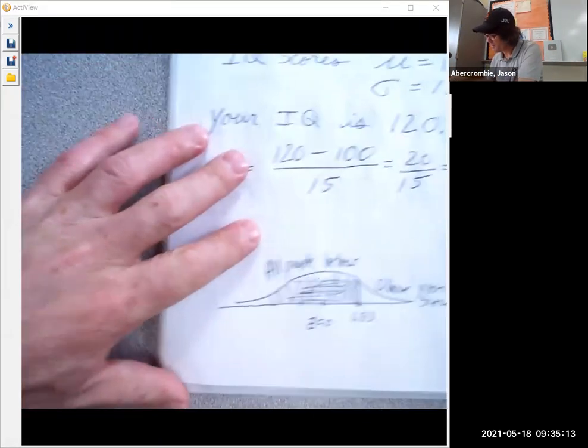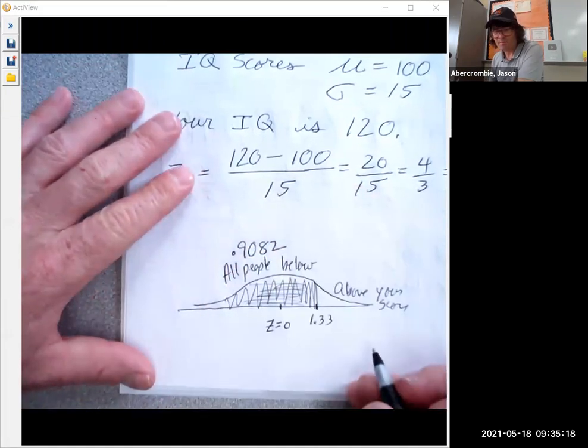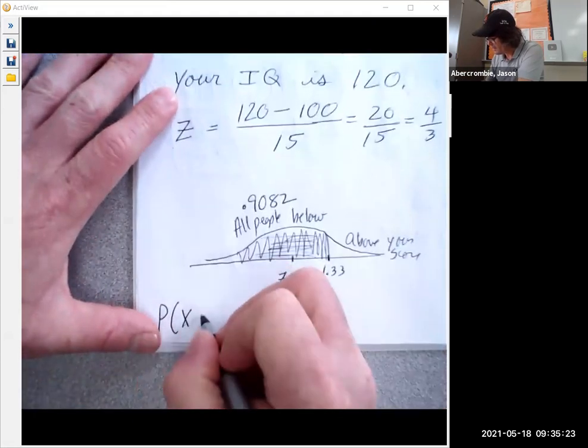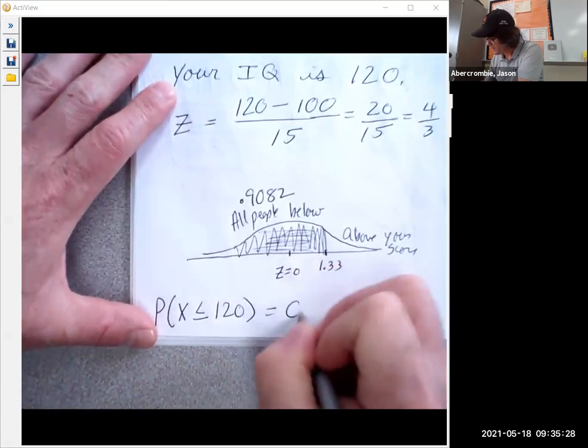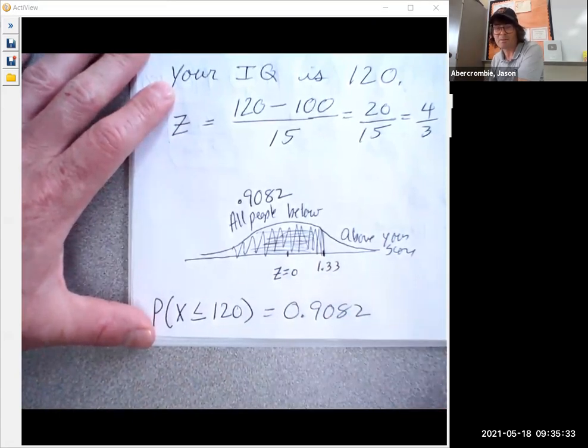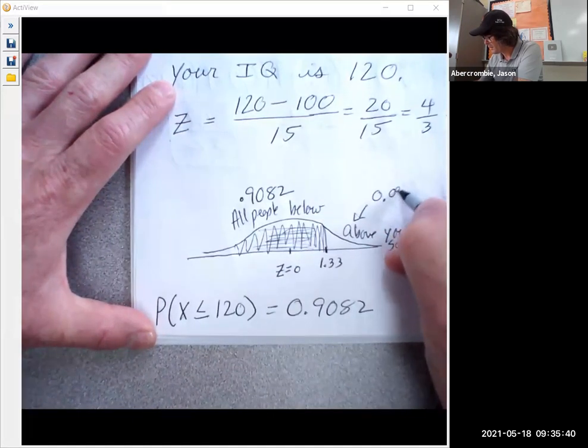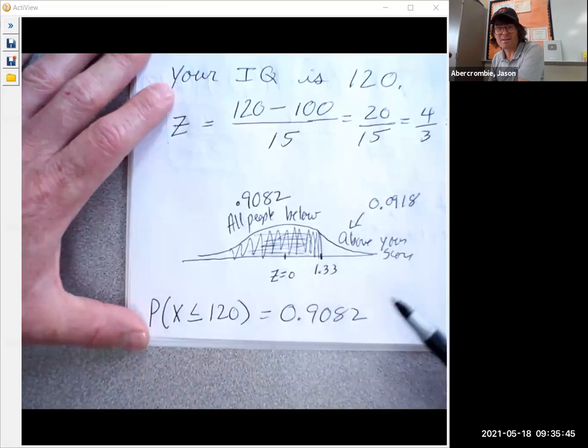So back to this—this area is 0.9082. So the probability of my score being less than or equal to 120 IQ is 0.9082. What that tells me is 90.8 percent of the people have a lower IQ score than I do, and then I guess what's this? This is 0.0918, I believe. So nine percent of the people have a higher IQ score than I do. That's how this works.